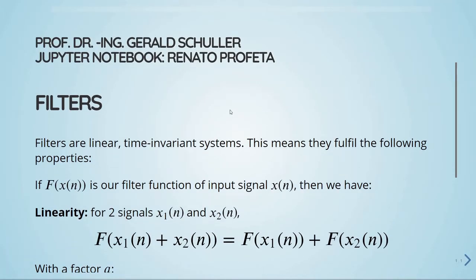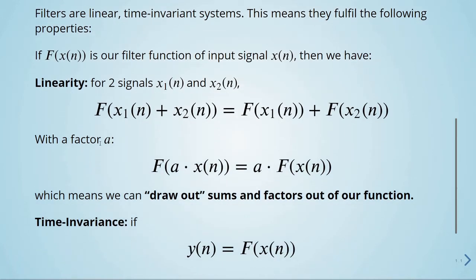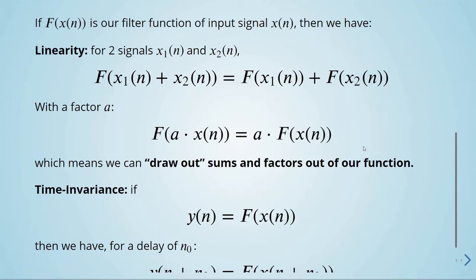Filters are linear time-invariant systems. This means they fulfill the following properties. If f is our filter function of input signal x, then we have linearity. For two signals x1 and x2, applying the filter function on the sum of these two signals is the same as applying the filter to the first signal and adding it to the filter of the second signal. If we have a factor a, filtering a multiplication of the input signal with factor a is the same as filtering the signal first and then multiplying by factor a — meaning we can draw out sums and factor out of our function.